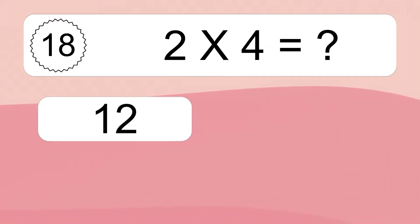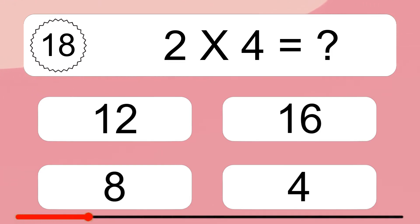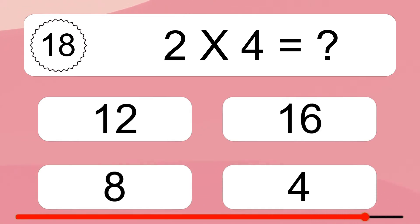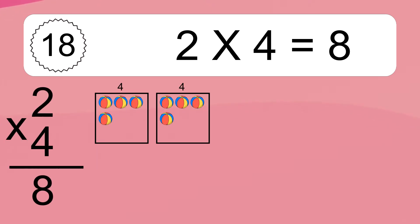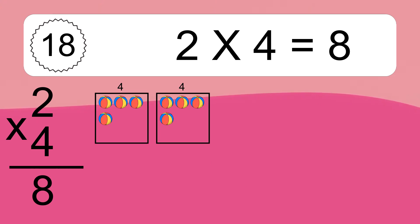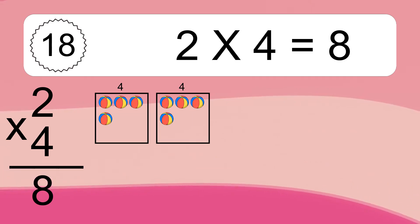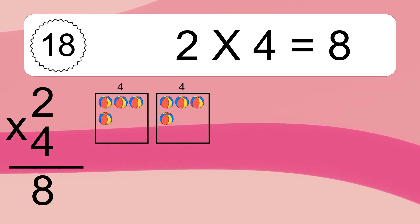2 times 4 equals what? 2 times 4 equals 8. We have 2 boxes and each box has 4 colorful balls inside. If you count all the balls in all the boxes together, you will have 2 times 4 balls. This equals 8 balls.